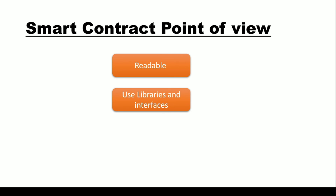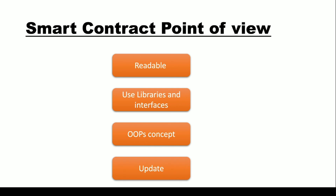Third, learn the concepts of object-oriented programming languages — it will be very helpful in creating well-structured smart contracts. You should understand how interfaces work and how libraries work; this will be very useful when creating a smart contract. Fourth, and most importantly, stay updated. Things in the blockchain world are changing at a very fast rate. If you are not updated with the latest trends, programming language versions, or compiler versions, you may be using an older version with known vulnerabilities, leading to potential million-dollar losses.